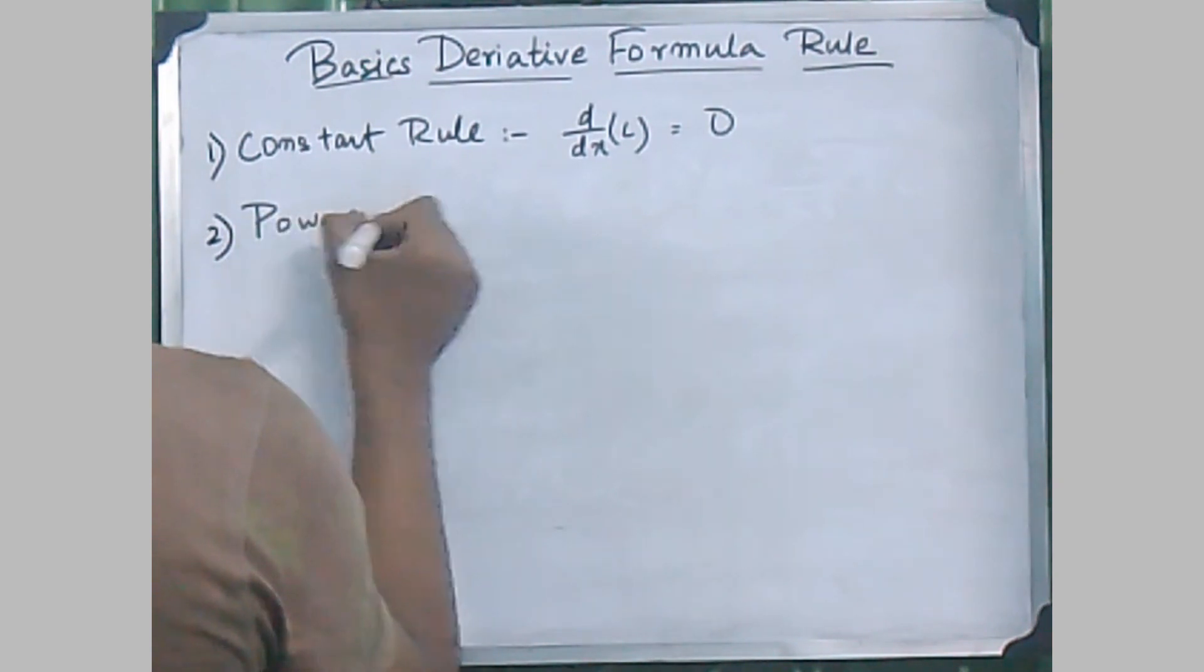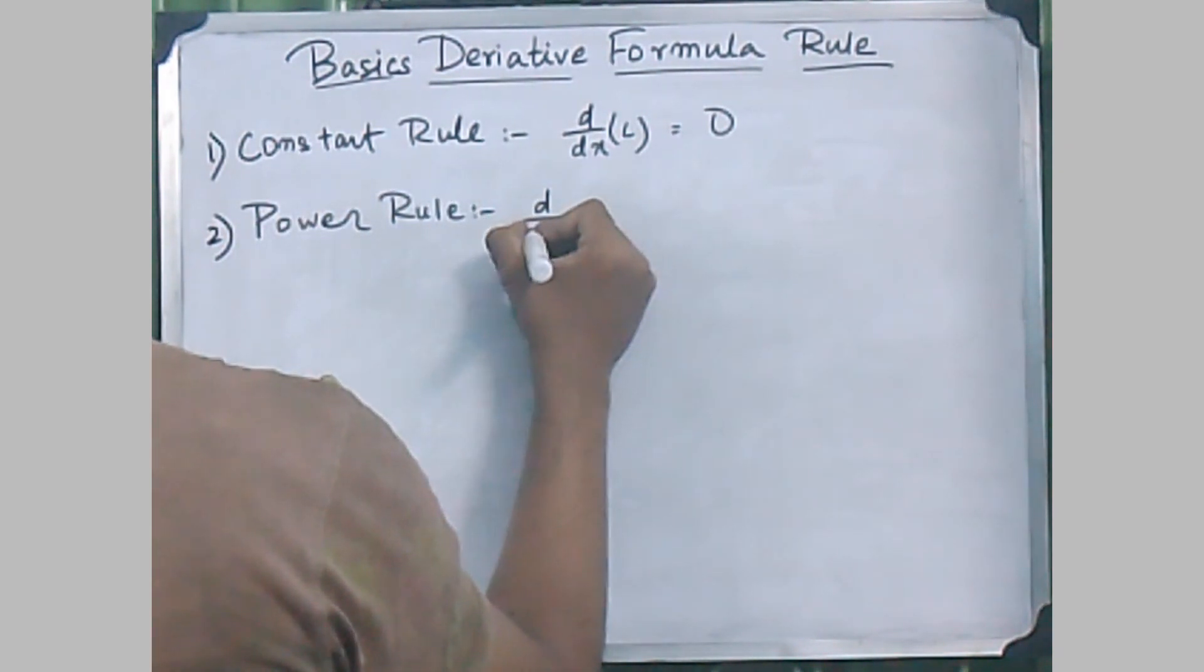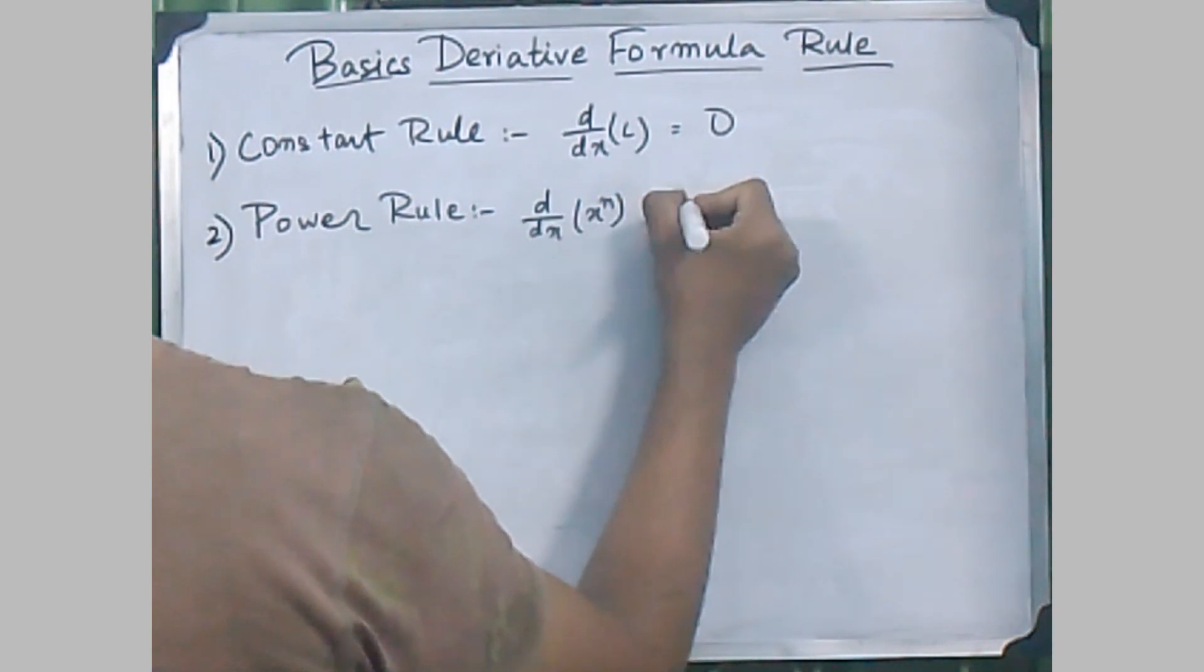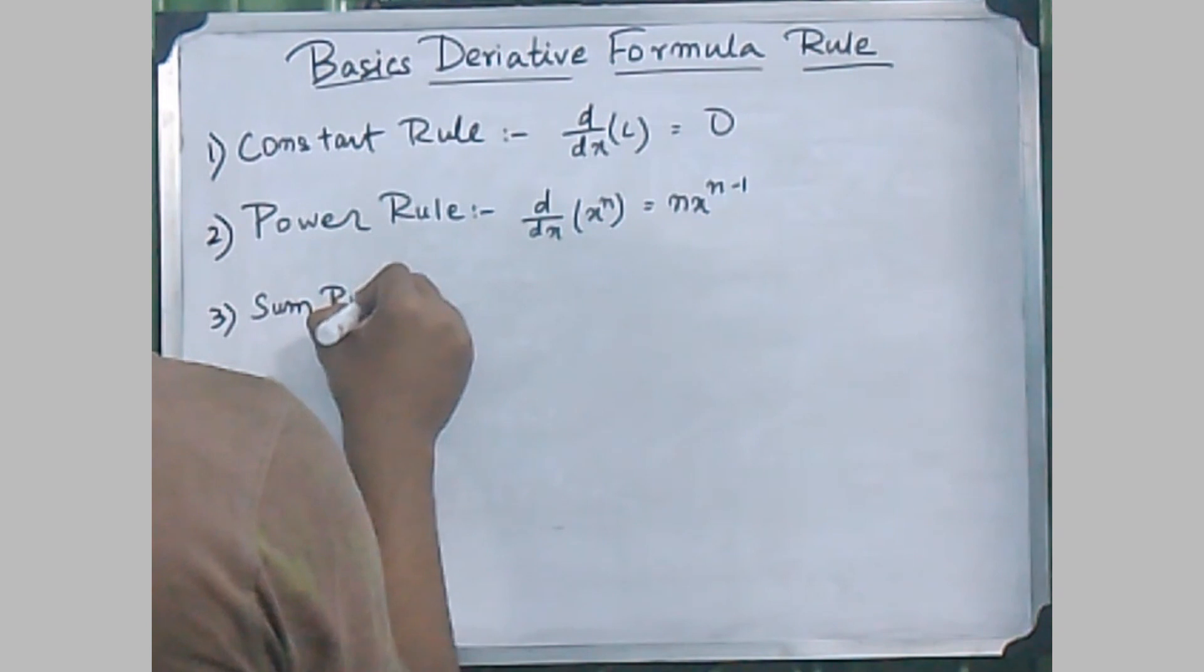The second rule stands for the power rule, where d/dx of x to the power of n will result to n times x to the power of n minus 1.